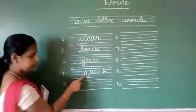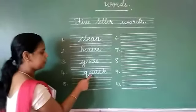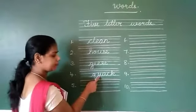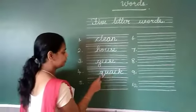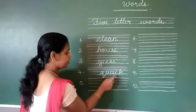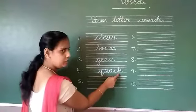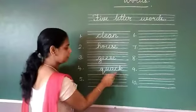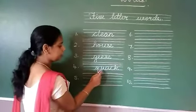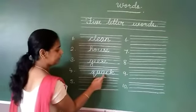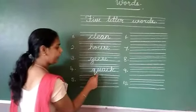Next one is Q-U-A-C-K. Quack. The sound of Q is Qu. U is A. A is again A. So Qu-A. C and K sound K. So Quack. Q-U-A-C-K. Quack.